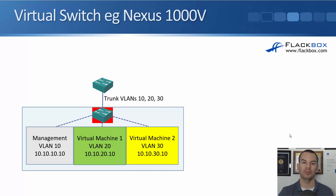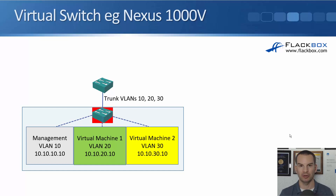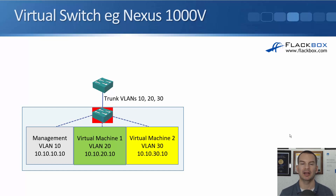The switch highlighted in red is running in software, not a physical device. We connect the physical port on the host to the physical switch and configure it as a trunk port, since traffic is going to multiple virtual servers in different VLANs. Traffic to virtual machine 1 is tagged as VLAN 20, to virtual machine 2 as VLAN 30, and management traffic as VLAN 10.